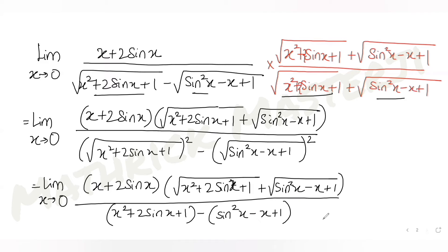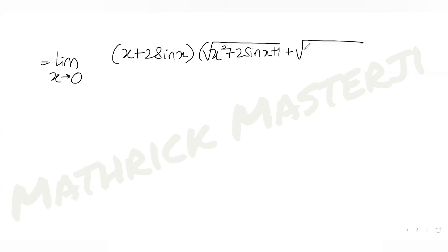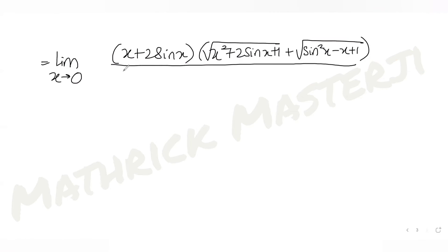Now let's simplify further. The numerator stays as (x plus 2 sin x) times the sum of the two roots. In the denominator, expanding gives x squared plus 2 sin x plus 1 minus sin squared x plus x minus 1. The plus 1 and minus 1 cancel, leaving us with a simplified denominator.